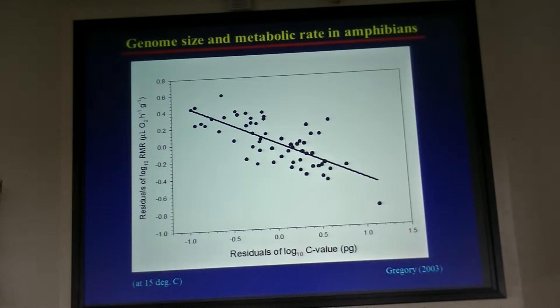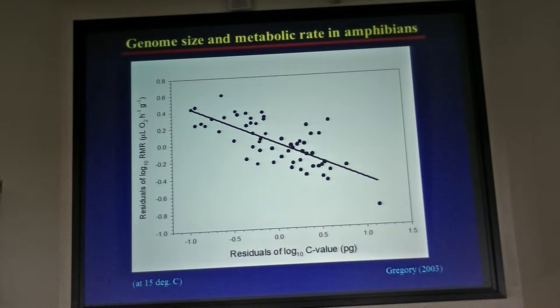Birds, in terms of genome size diversity, are not that interesting — they don't vary across species very much. Amphibians, on the other hand, show about a 120-fold difference from the smallest to the largest genome. So it's a much more challenging puzzle to understand why that is.